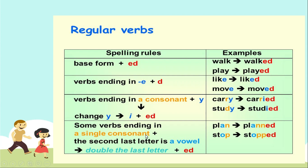Algunos verbos que terminan con una consonante singular seguida de una vocal — como pueden ver en el ejemplo, la última letra es consonante pero la penúltima letra es una vocal. Cuando sucede esto, lo que debemos hacer es repetir la última consonante y agregarle la E y la D.